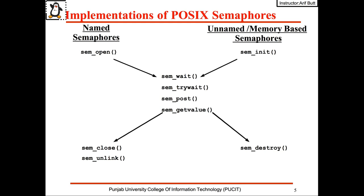The first type is named semaphores. The sem_open call is used to create a new semaphore or open an existing one. It is identified by a name and on Linux these are created as files in /dev/shm. Multiple processes or threads knowing that name can use sem_wait, sem_post, sem_trywait, and sem_getvalue as per the logic of the program, and finally close the semaphore and delete it using the sem_unlink call.